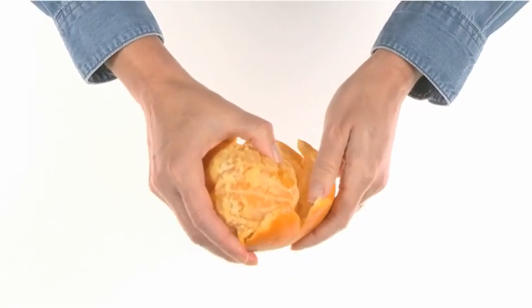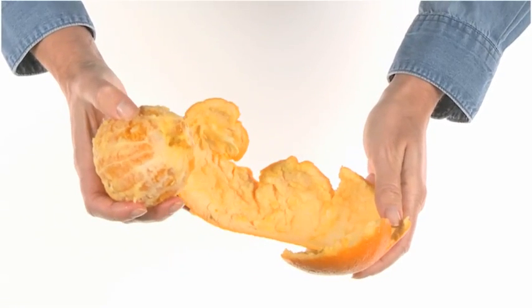With an orange, the skin can be peeled and flattened. Our planet can't be peeled back.